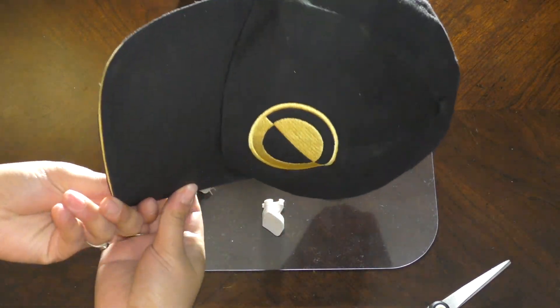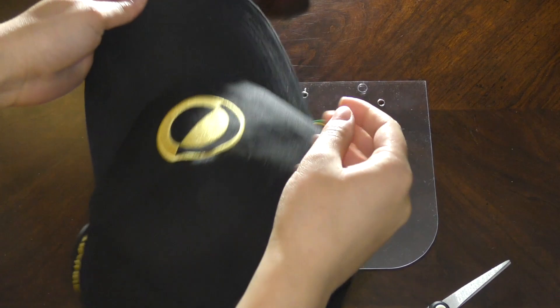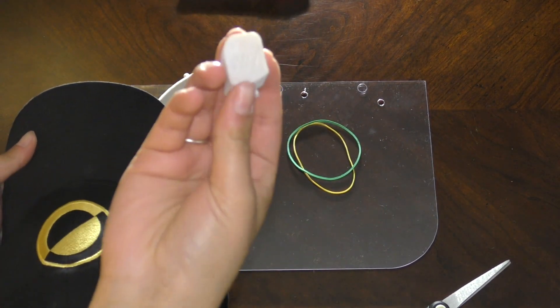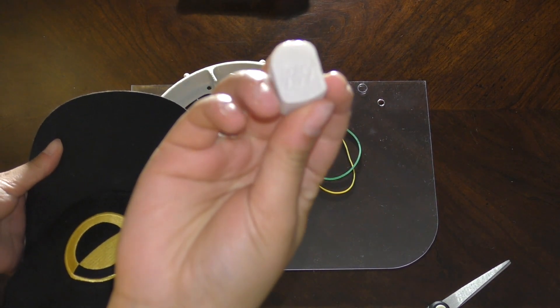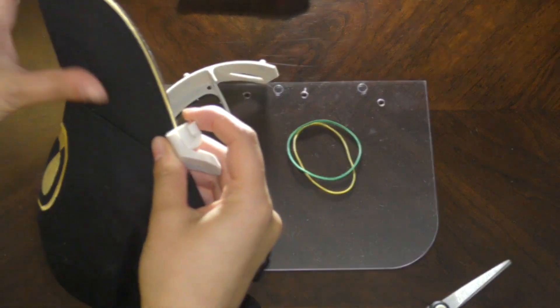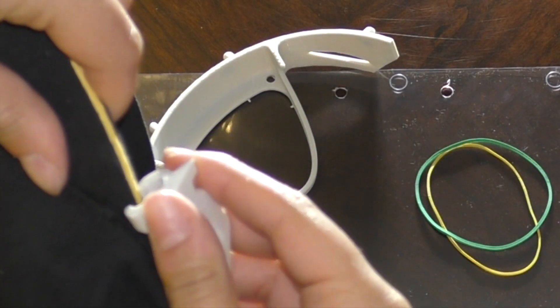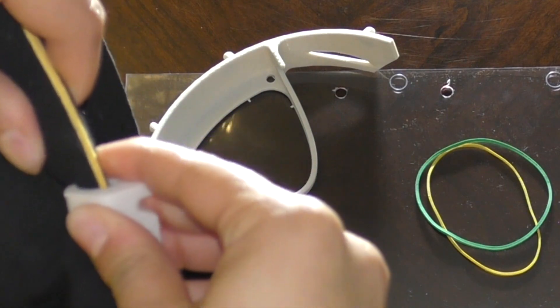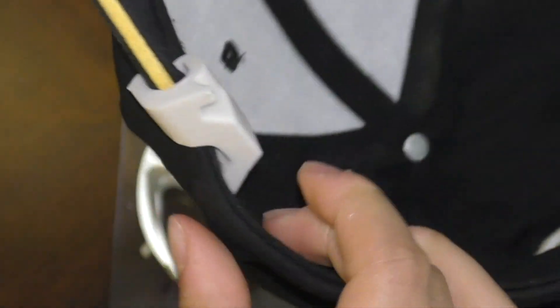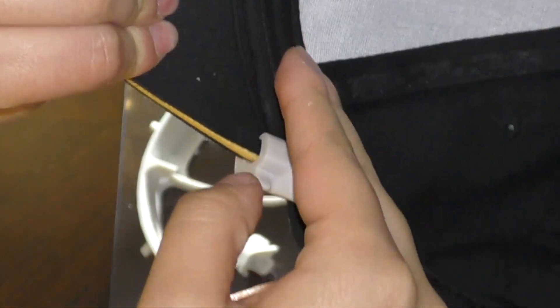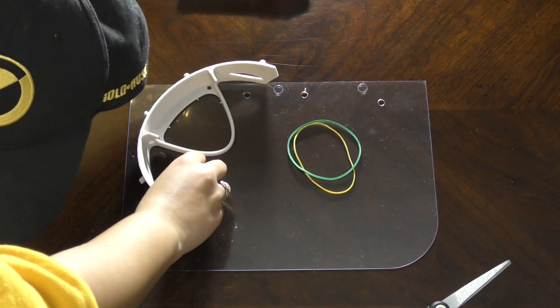Next you're going to want to take the hat that you want to attach the face shield to, and you're going to take the right-hand clip with the engraving on it and put it on the right-hand side. Attach the clip like so. Notice how the flat side of the clip is on the inside so it's flush against the hat. This is where your head will be against the clip.